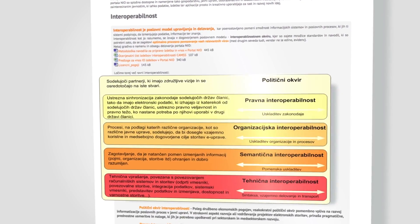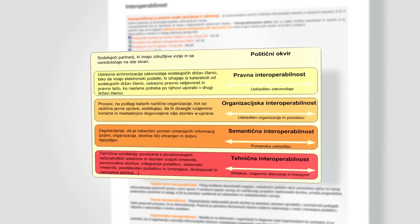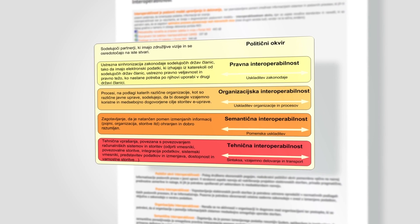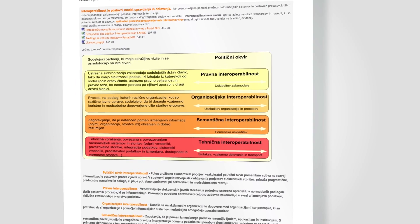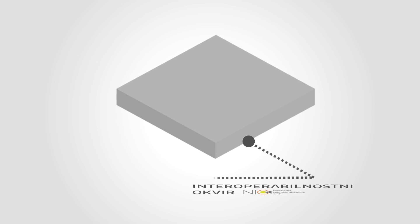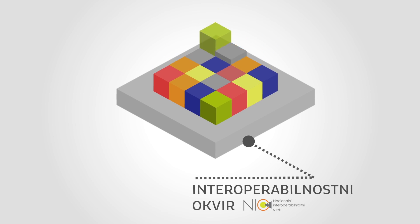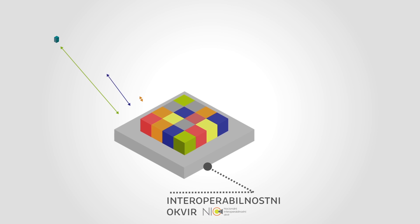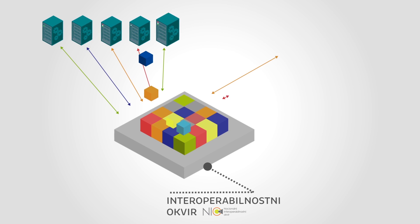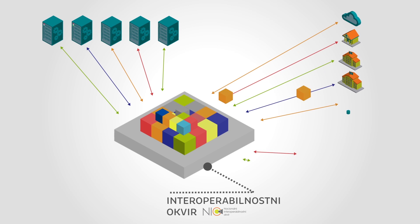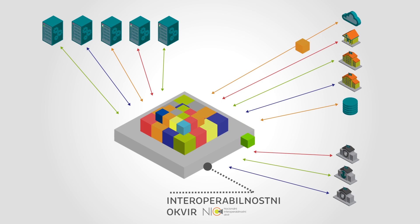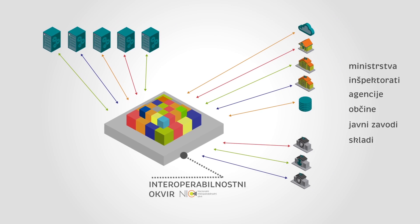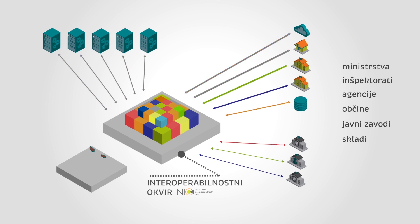The Interoperability Framework consists of different guidelines, standards, information and building blocks. It helps to improve the coordination of business processes and enables improved compatibility and connectability on the national and international level.